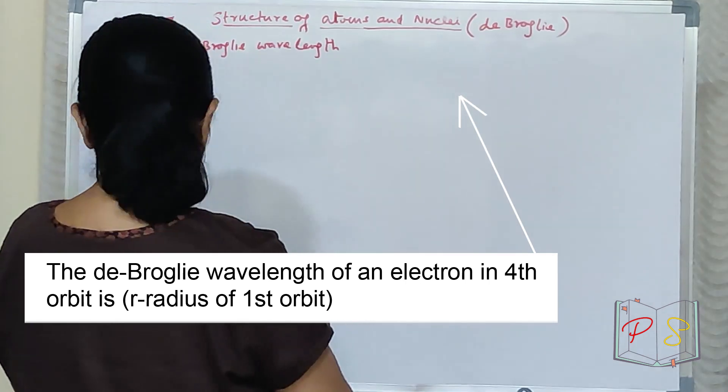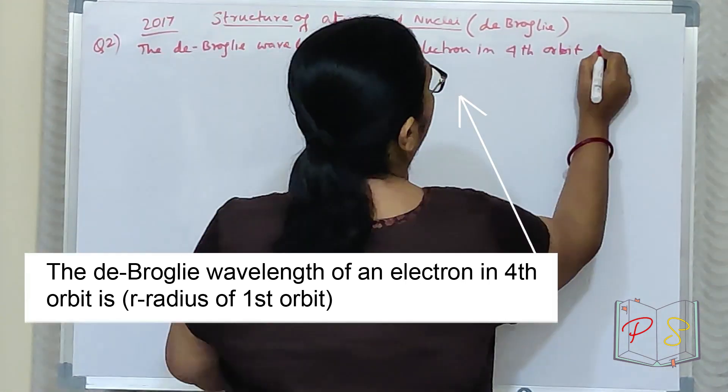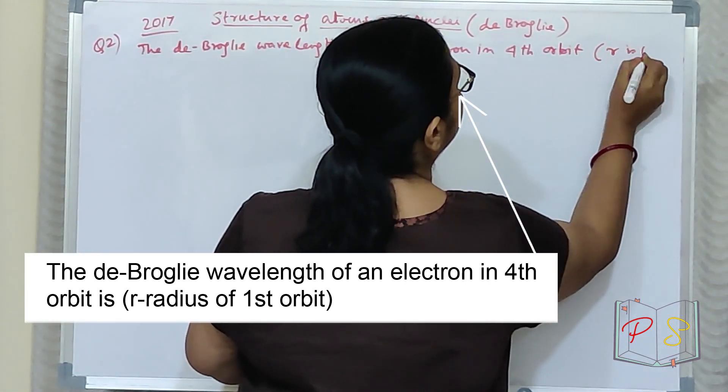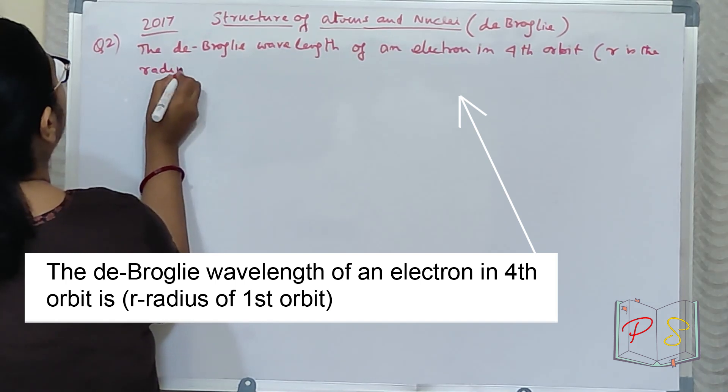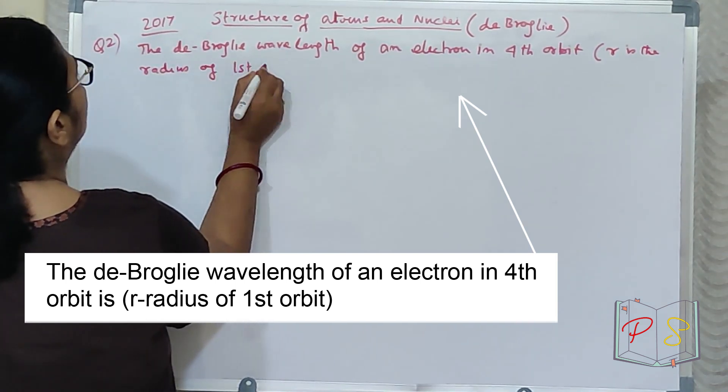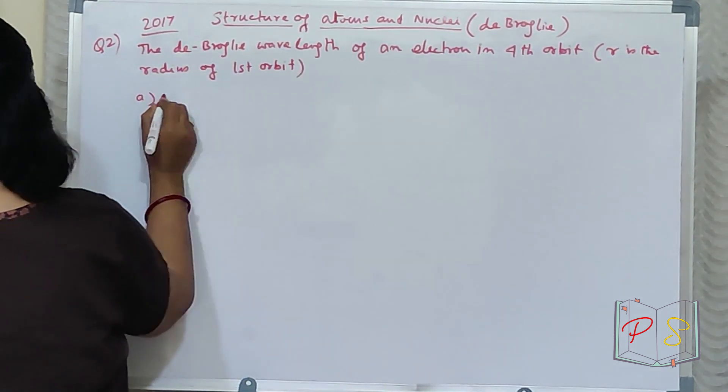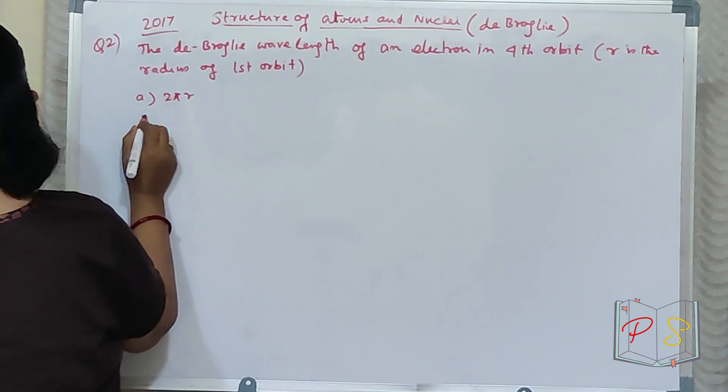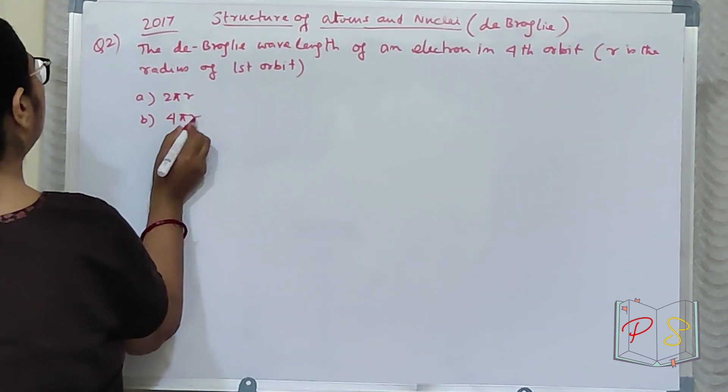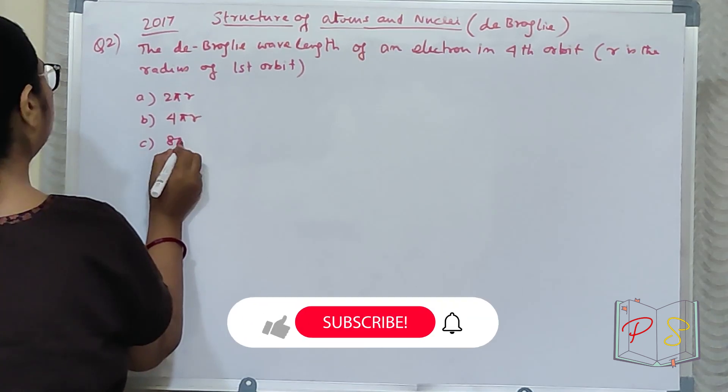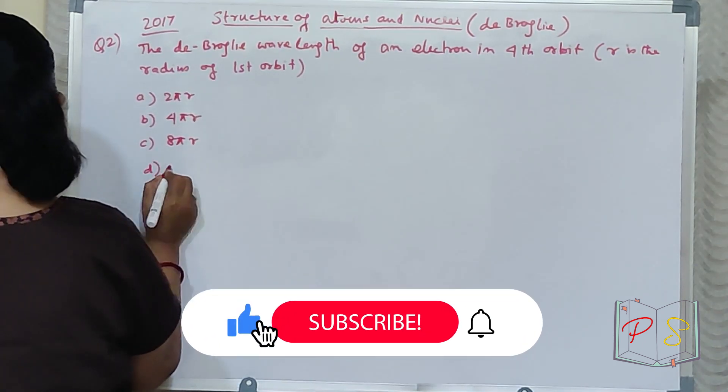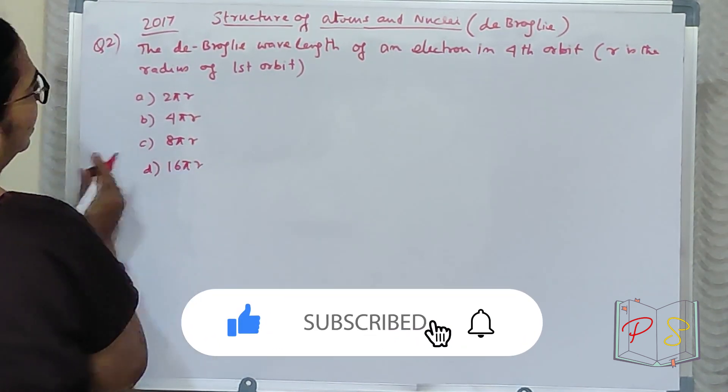The de Broglie wavelength of an electron in 4th orbit. Bracket says r is the radius of 1st orbit. Your options are: a) 2πr, b) 4πr, c) 8πr and d) 16πr.